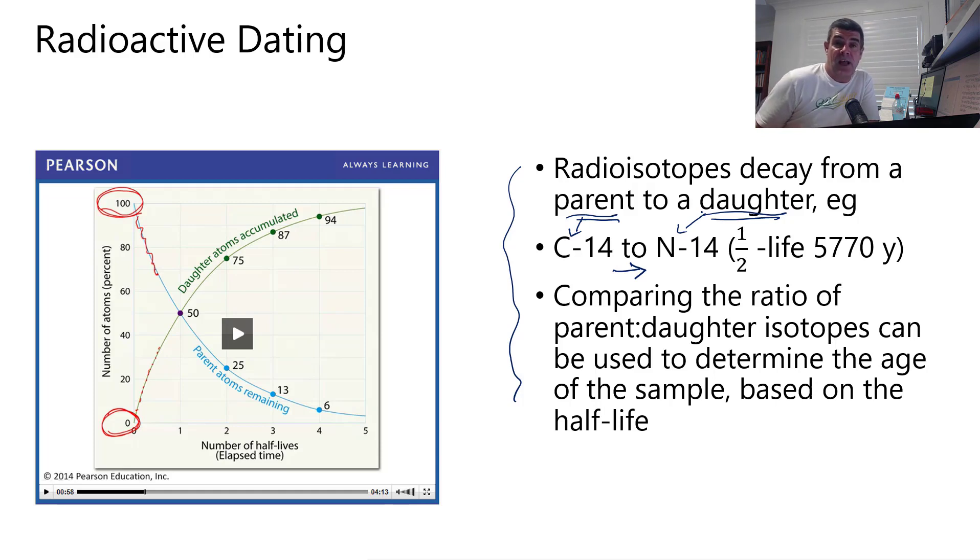Now, the problem with carbon-14 in terms of a dating isotope is that it only has a half-life of 5,700 odd years. And generally speaking, 10 half-lives is about as many as you can look at before the amount of original parent material is so small as to be almost non-detectable. So that means you can only age rocks or artifacts with carbon dating up to a maximum of about 57,000, 60,000 years. That's no good for the age of the Earth, and that's one of the reasons why we use uranium and lead.